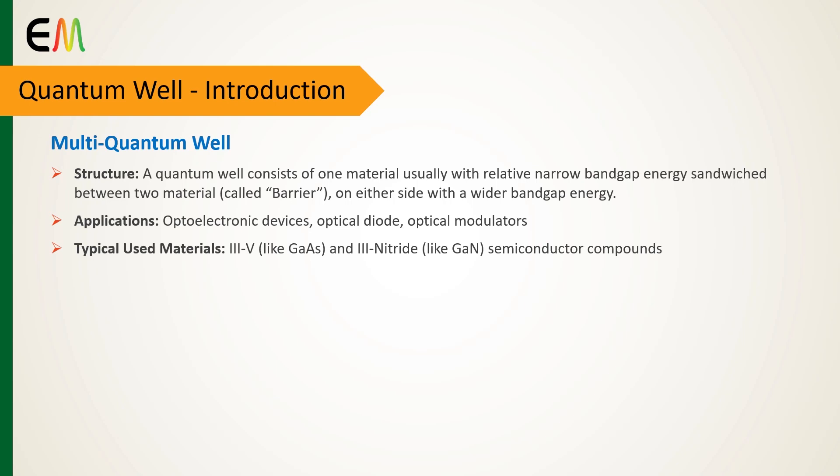Typically, quantum well structures use III-V semiconductor groups like gallium arsenide, or nitride semiconductor combinations such as gallium nitride and aluminum nitride.